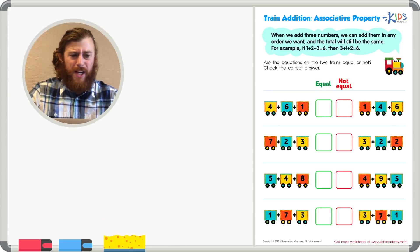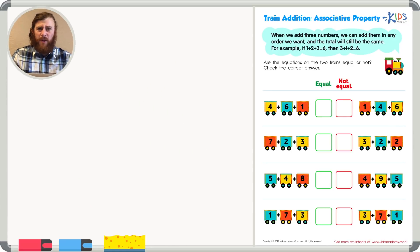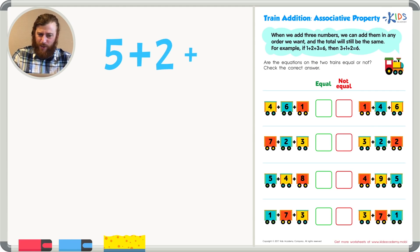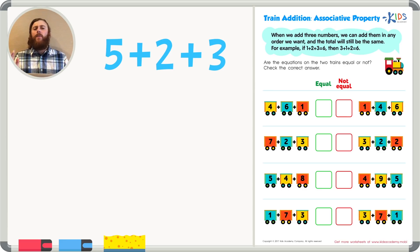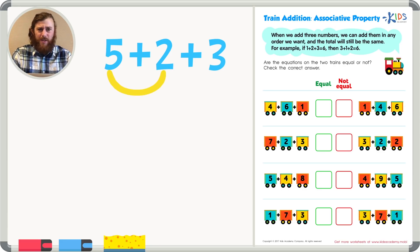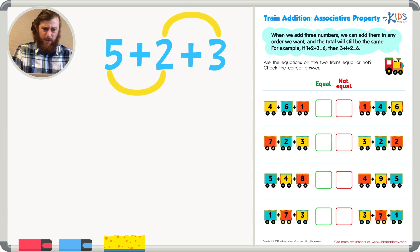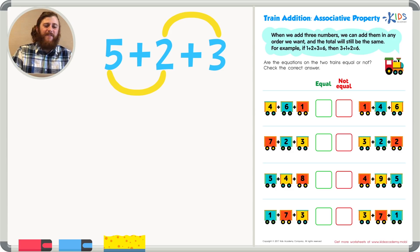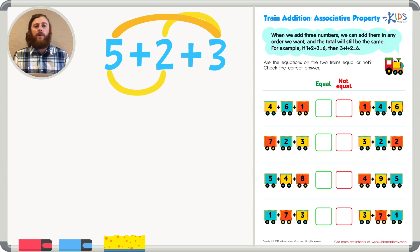The associative property says that if we have a group of numbers that we want to add together, like 5 plus 2 plus 3, we can add them in any order that we want. If we wanted to add 5 plus 2 first, we can. If we wanted to add 2 plus 3 first, we can. Even if you wanted to add 5 plus 3 first, that would be okay too.